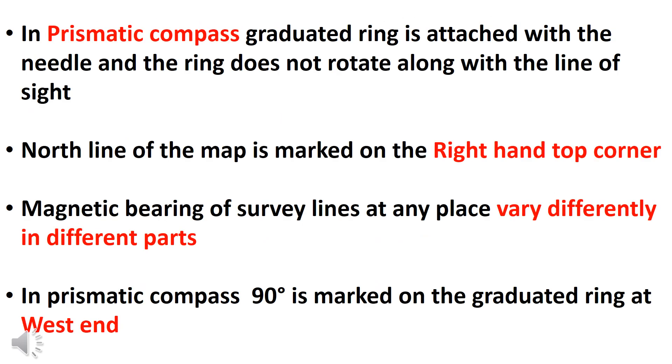In the Prismatic compass, the graduated ring is attached with the needle, and the ring does not rotate along with the line of sight.